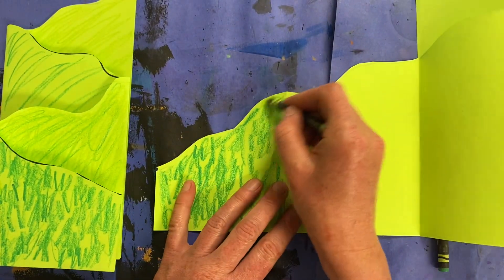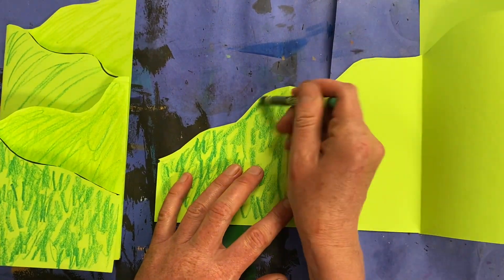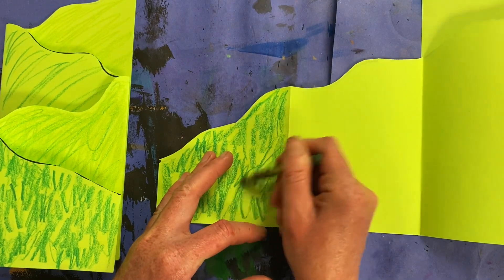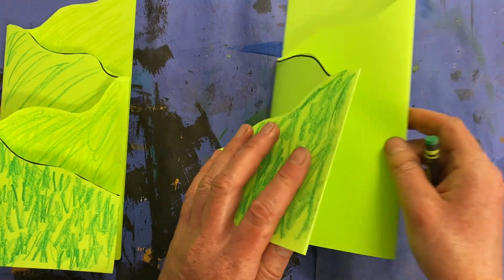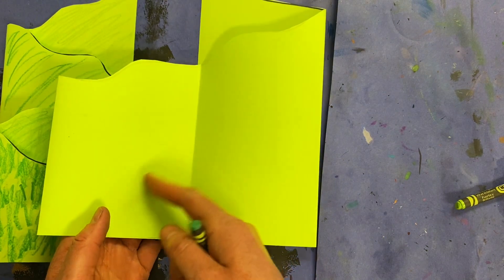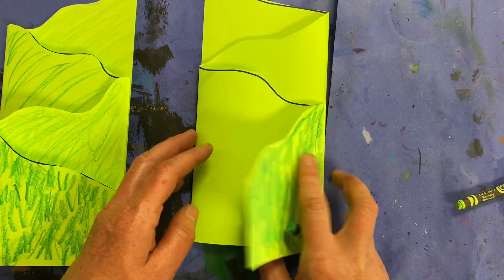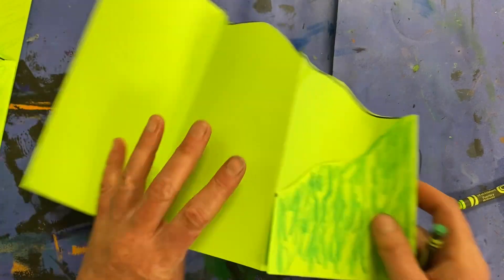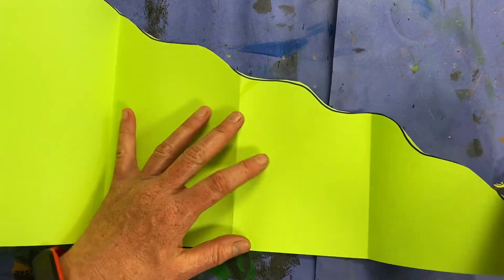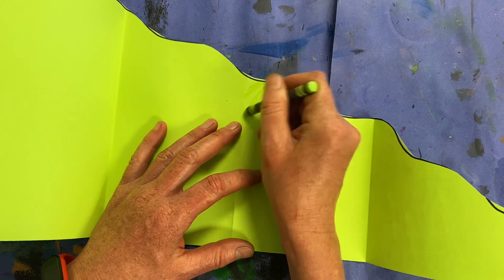flipped it open and began coloring this space. Then to color the next one I need to close it up because this would have been the wrong place. I need to color this space right here, so now I'm going to open it up and begin coloring that space.